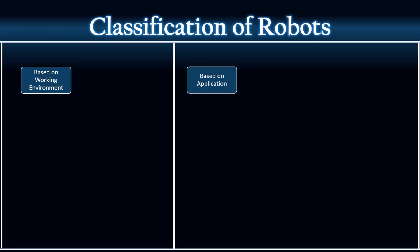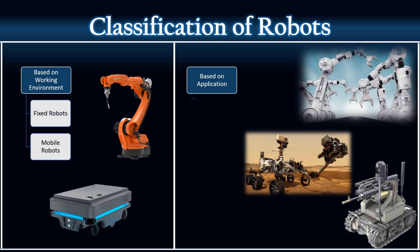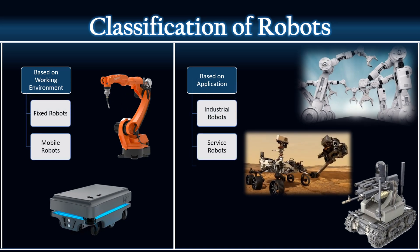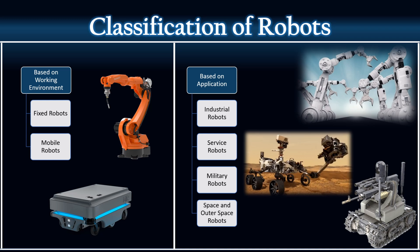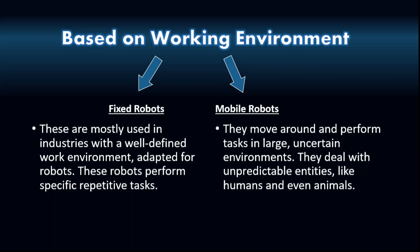Robots can be classified based on working environment and application. Based on working environment, there are two types: fixed robots and mobile robots.